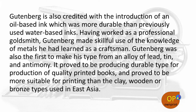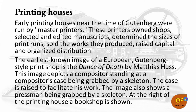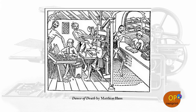Printing houses: early printing houses near the time of Gutenberg were run by master printers. These printers owned a shop, selected and edited manuscripts, determined the sizes of print runs, sold the works they produced, raised capital, and organized distribution. The earliest known image of a European Gutenberg-style print shop is the Dance of Death by Matthias. This image depicts the compositor standing at a compositor's case being grabbed by a skeleton, with the case raised to facilitate his work. The image also shows a pressman being grabbed by a skeleton at the right of the printing house, and a bookshop is shown. You can see the image in this slide.